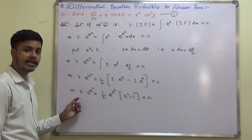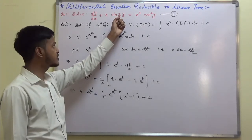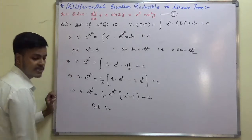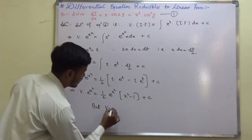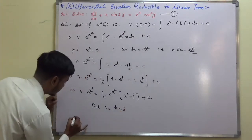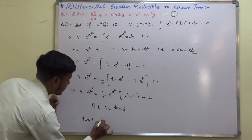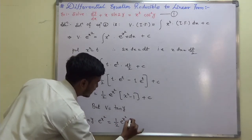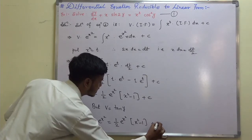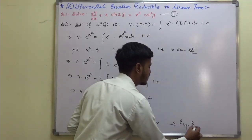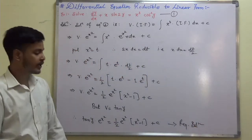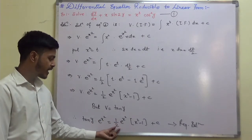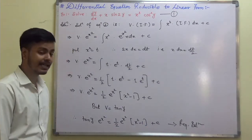This is the solution of the linear differential equation, but we want the solution of the original equation in terms of x and y. Resubstituting v equals tan y: tan y·e^(x²) equals (1/2)·e^(x²)·(x² minus 1) plus C. Dividing throughout by e^(x²) gives tan y equals (1/2)·(x² minus 1) plus C·e^(-x²). This is the required solution.